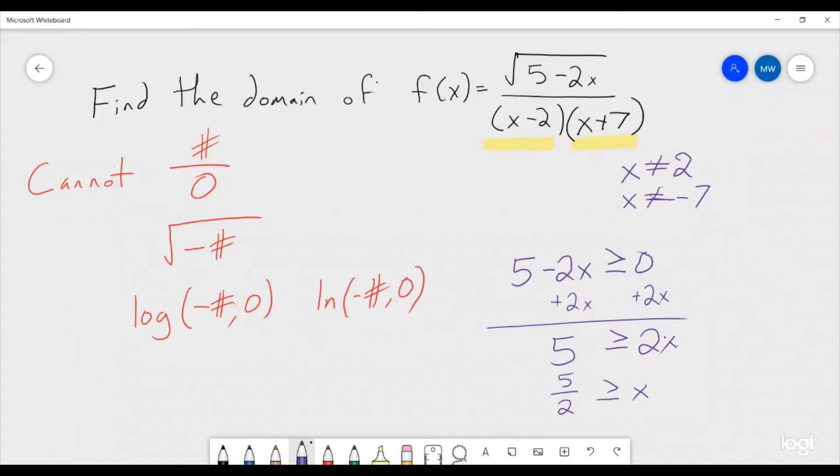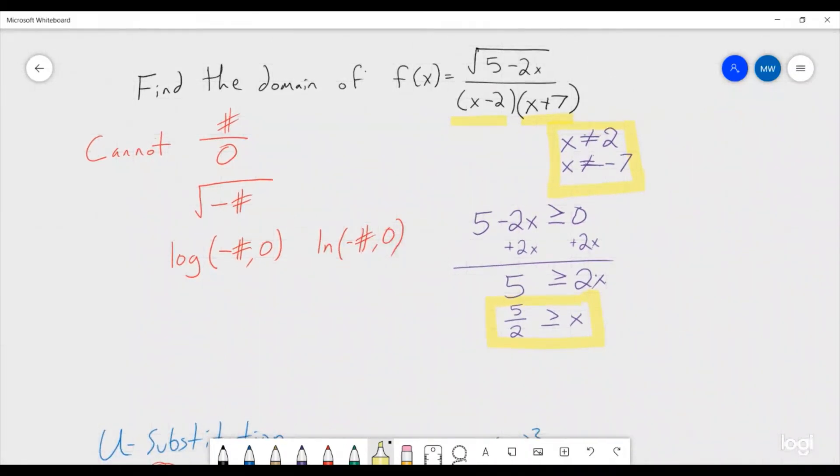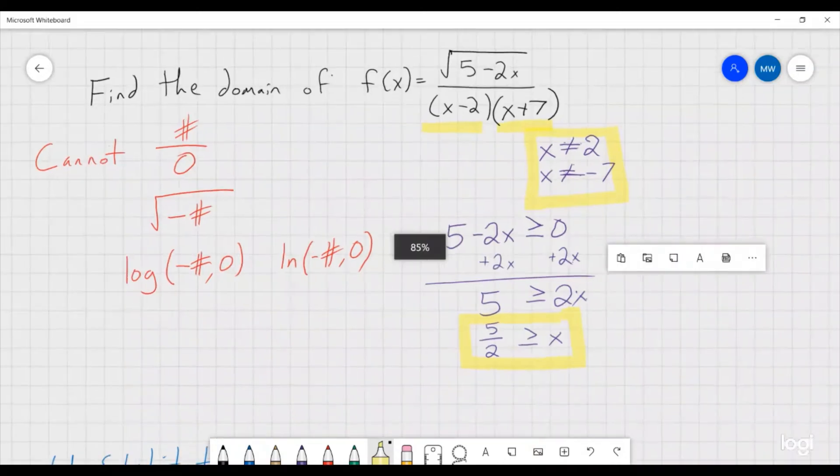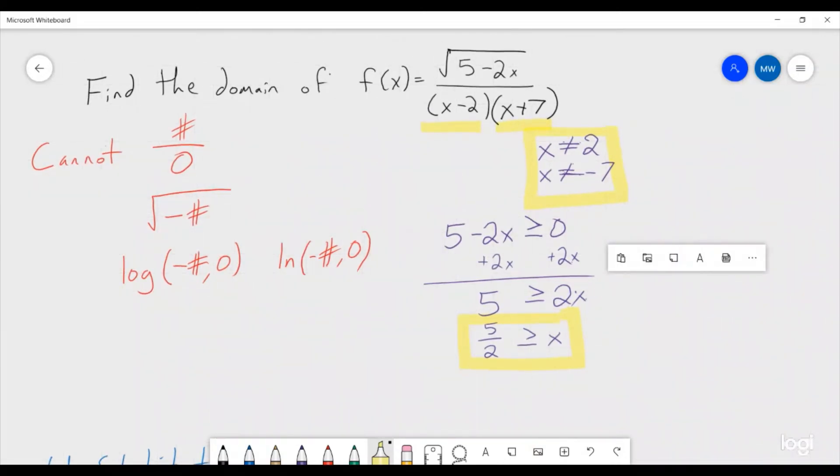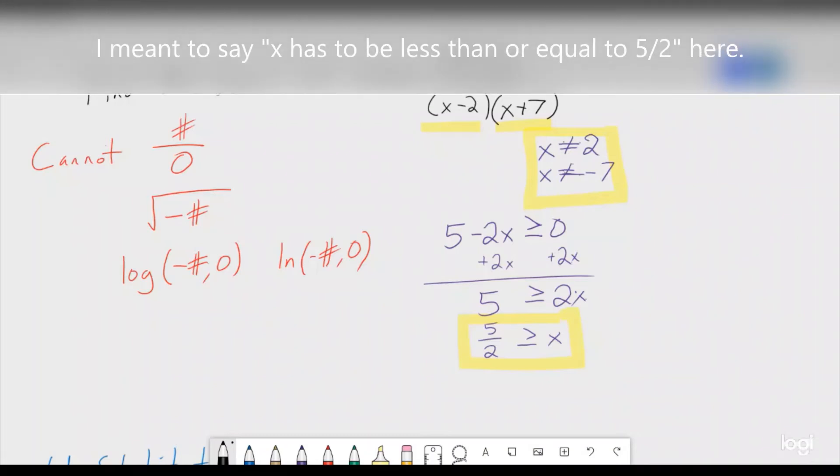Okay, so how do we put all three of these pieces together to give us our domain? Well what we can do is we can go through each piece and put them all together as one big thing. We know x can't be 2, x can't be negative 7, and x has to be less than or equal to 5 halves.